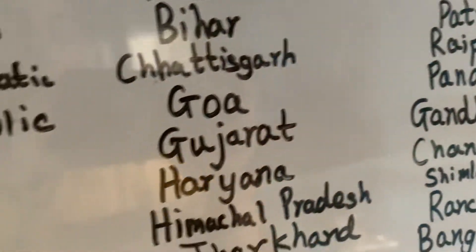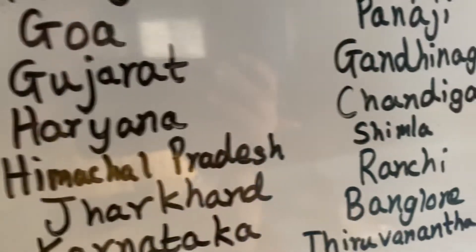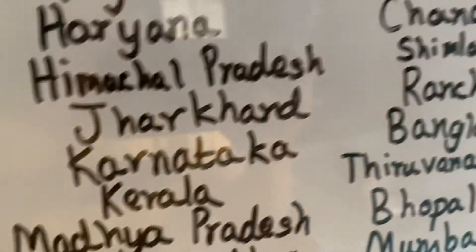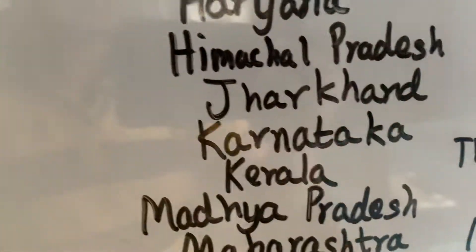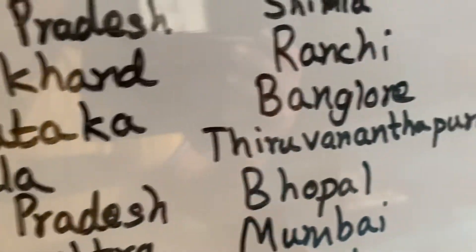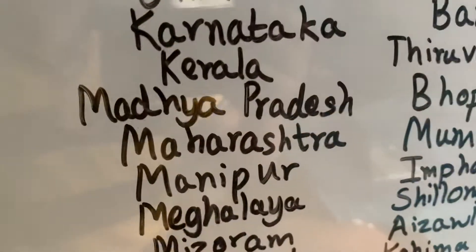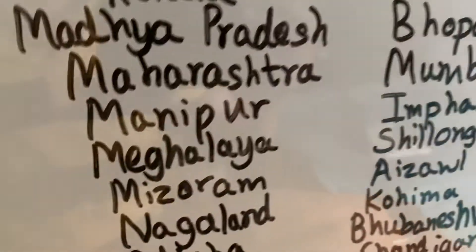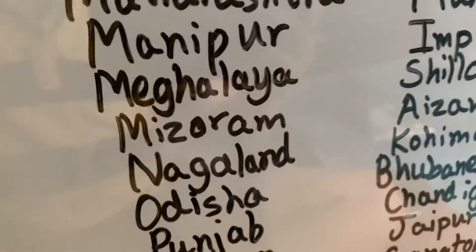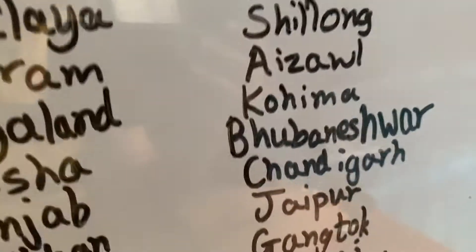Gujarat — capital Gandhinagar. Haryana — capital Chandigarh. Himachal Pradesh — capital Shimla. Jharkhand — capital Ranchi. Karnataka — capital Bangalore. Kerala — capital Thiruvananthapuram. Madhya Pradesh — capital Bhopal. Maharashtra — capital Mumbai. Manipur — capital Imphal. Meghalaya — capital Shillong. Mizoram — capital Aizawl. Nagaland — capital Kohima.